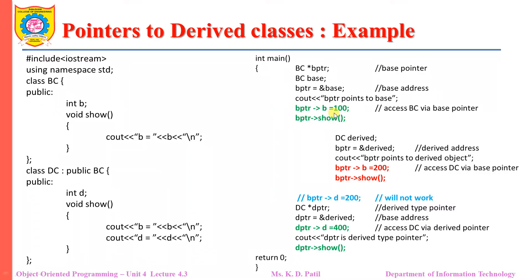Here we have BPTR as a pointer which is created from base class BC. Here is the object of base class BC, and here is the statement where the BPTR pointer is going to point to the object of class BC.